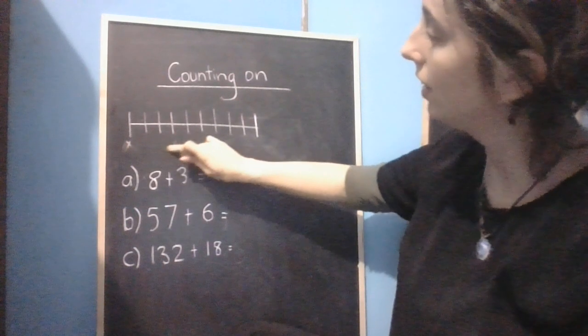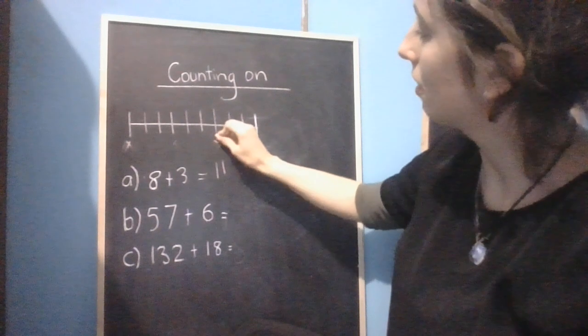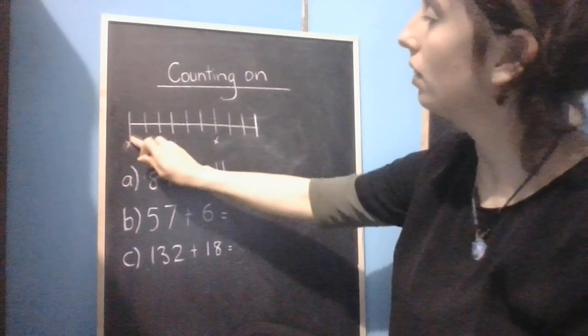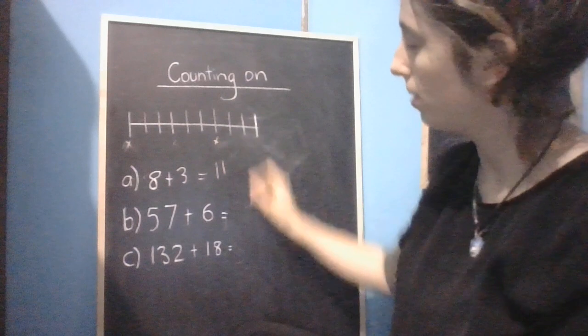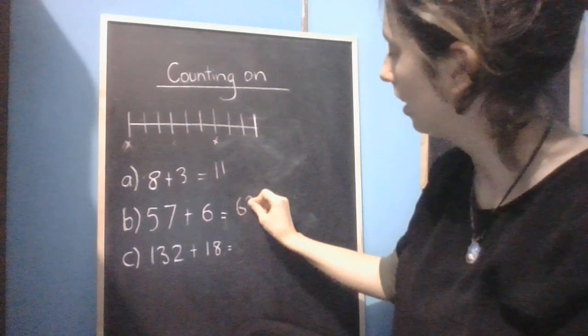58, 59, 60, 61, 62, 63. And just to be sure, we can count: 1, 2, 3, 4, 5, 6. We've made the correct number of jumps. So 57 plus 6 would be 63.